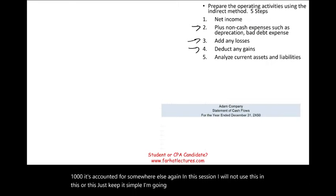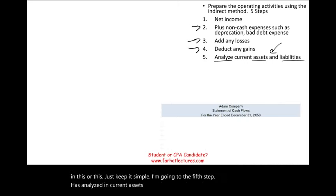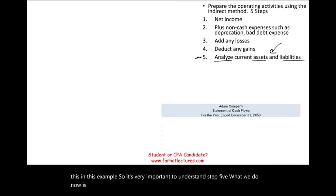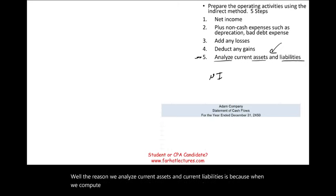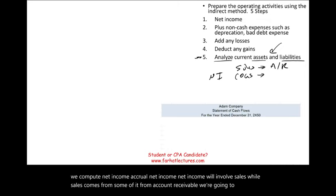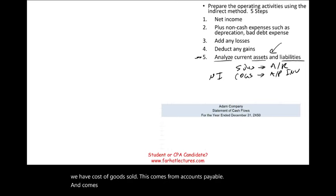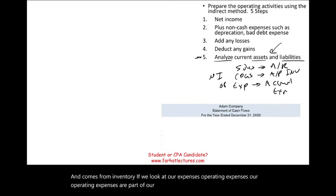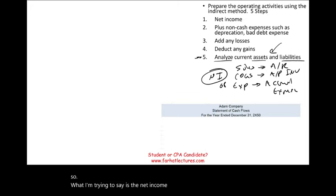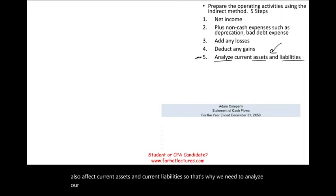Step five is analyzing current assets and liabilities. We analyze current assets and current liabilities because when we compute net income using accrual accounting, net income will involve sales — some of which come from account receivable — and cost of goods sold, which comes from accounts payable and inventory. Our operating expenses are part of accrued liabilities. The figures that go into net income also affect current assets and current liabilities, so that's why we need to analyze them.